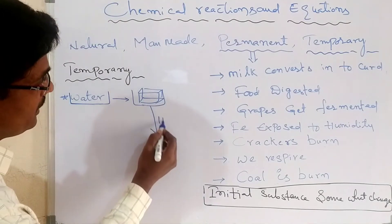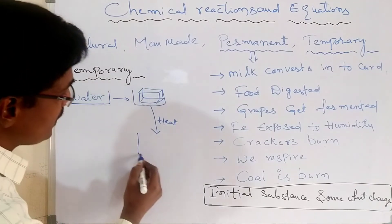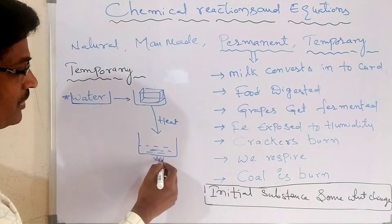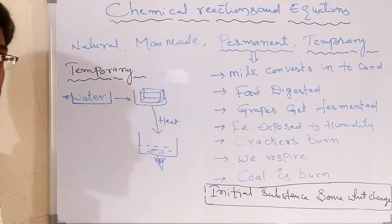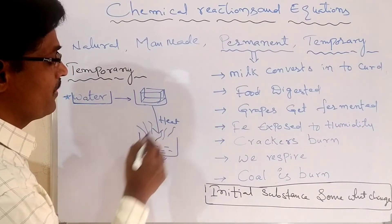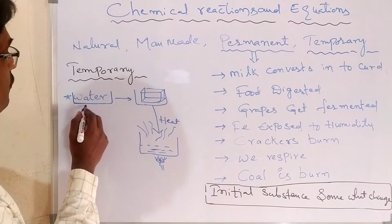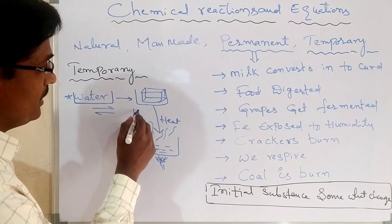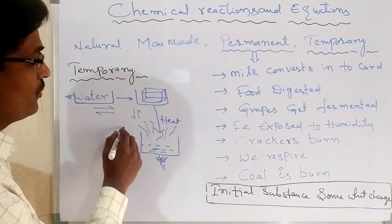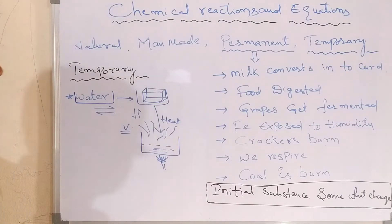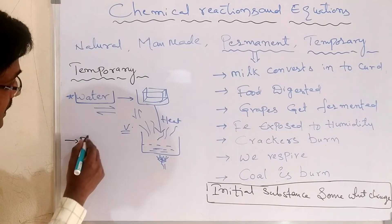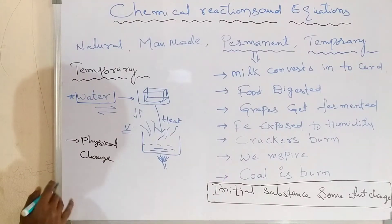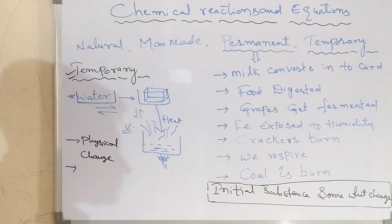Take that solid and apply heat. It converts back to liquid. Keep heating continuously, and after reaching 100 degrees centigrade, vapor comes out. So the changes that take place here are: water is converted into ice, ice is converted into liquid, then liquid is converted into vapor. Only physical changes take place here. There is no change in composition. That is why it is a temporary change.